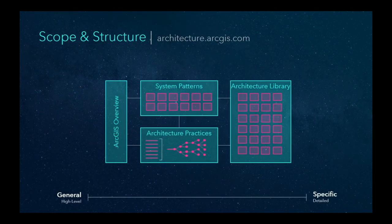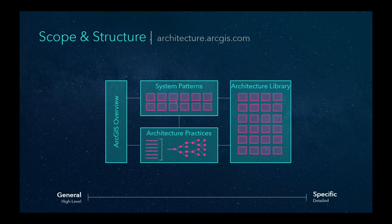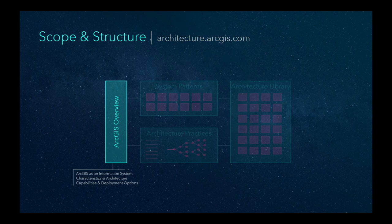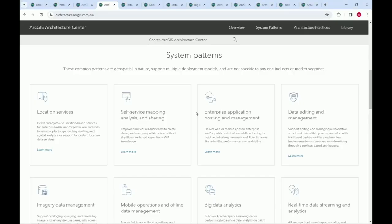There are four main parts that fall roughly on a level of detail spectrum from general to specific. The first section is the ArcGIS overview, which is a top-down, holistic look at ArcGIS as a system and as a technology platform you can use to build business and IT systems for your organization — resisting the temptation to jump straight into products or capabilities.